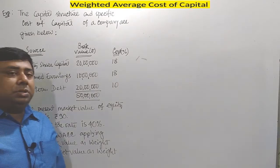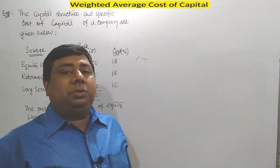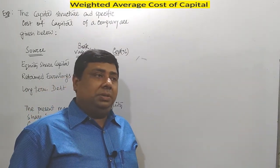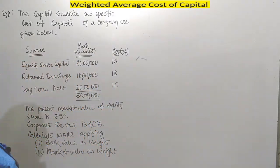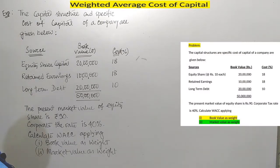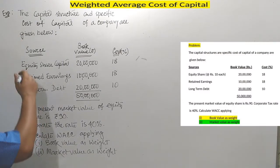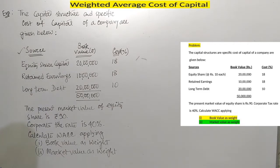Let's solve another question on weighted average cost of capital. First, let me go through the question. The capital structure and specific cost of capital of a company are given. The sources are equity share capital, retained earnings, and long-term debt.